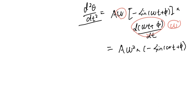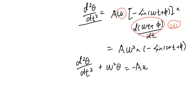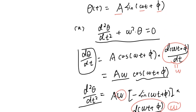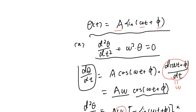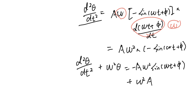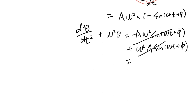Now, d²θ/dt² plus omega squared times theta equals minus A·omega²·sin(omega t + phi) plus omega squared times theta. Since theta equals A·sin(omega t + phi), those two terms cancel, and we get the required equation equal to zero.